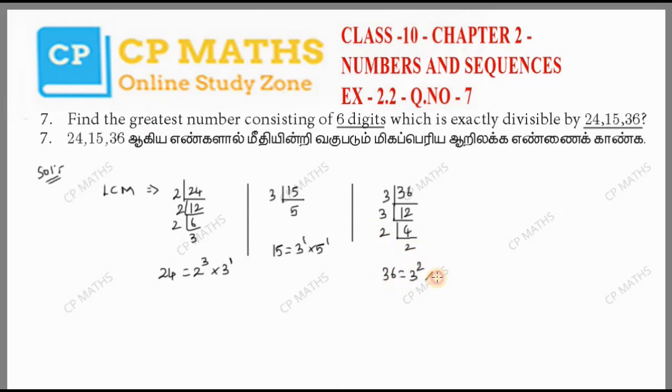The final LCM uses the highest powers: 2 cube times 3 square times 5. That's 8 times 9 times 5.